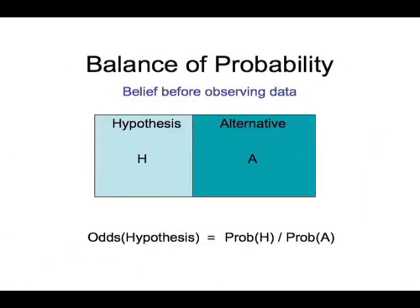So what's our belief before observing data? On the left we have a hypothesis — in light blue, we'll call it H for hypothesis — and an alternative in dark blue, we'll call it A for the alternative. Between the two, we cover all possibilities with no overlap. The odds of the hypothesis is the probability — which for this talk is just the area of the shape — of the left side divided by the area of the right side.